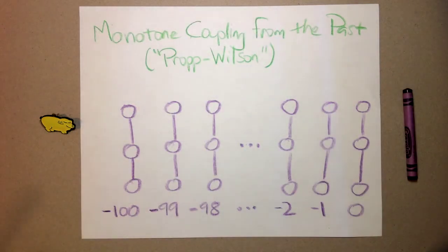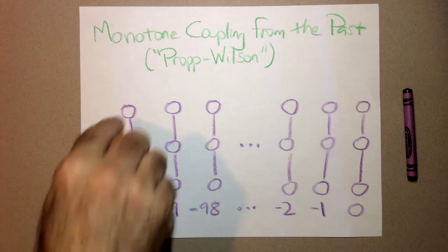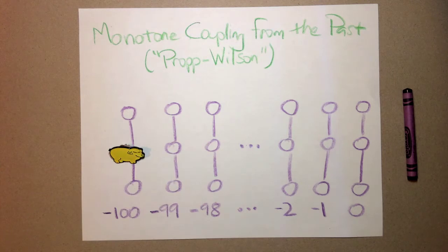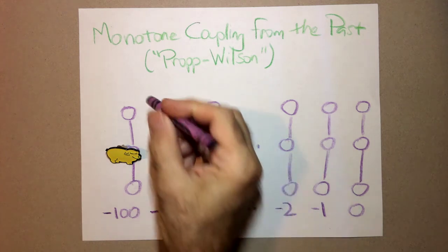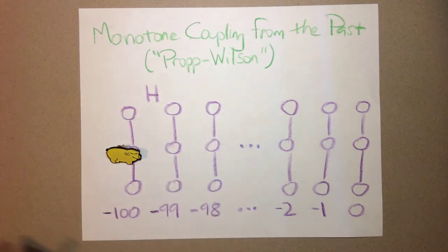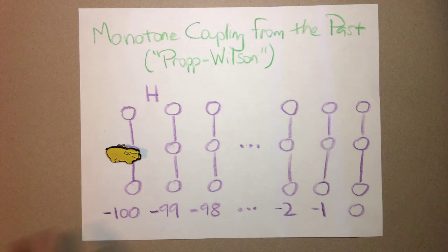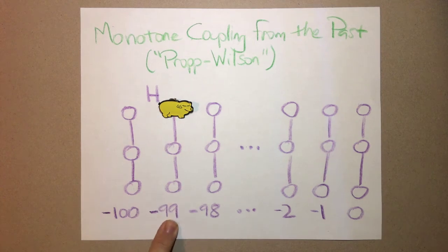So let me switch now to a toy model — the simplest picture I can think of that illustrates the key idea of coupling from the past. This is a random model where you toss a coin a hundred times to decide what should happen to a token that starts out at the middle position on a ladder with three rungs: a bottom rung, middle rung, and top rung. We start the token at the middle rung and toss a coin. Every time the coin comes up heads, the token moves up by one step if it can, or stays put if it's already at the top. We're now at time negative 99.